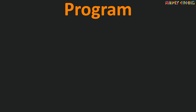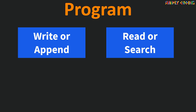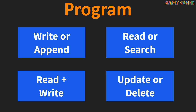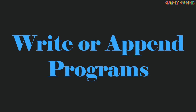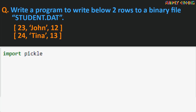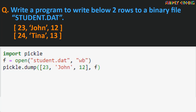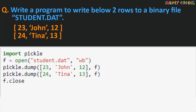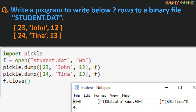Now the program you could be asked could be a write or append kind of program, a read or search kind of program, a read plus write kind of program, or an update kind of program. We will start with the simple write program first. For example, write a program to write two rows to a binary file student.dat. Here the data is in list format. We start by importing pickle, open the file in write binary mode, call pickle.dump with data and file handle to write each row, and close the file at the end. If you try to open a binary file, you will see it is not human readable.